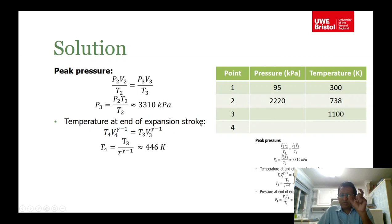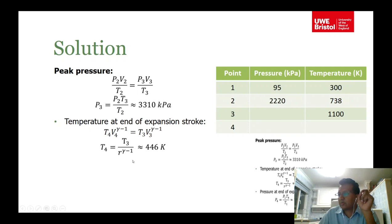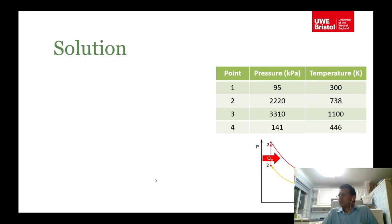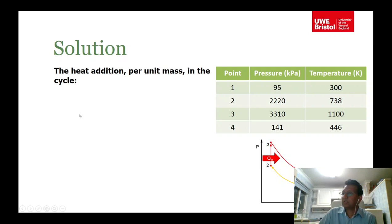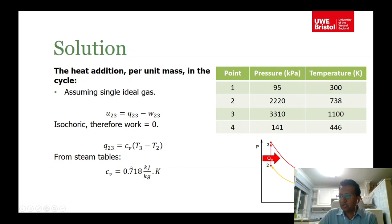With conditions at state 3 known, you apply the isentropic relation P3V3^gamma = P4V4^gamma to find temperature T4 and pressure P4. P4 = P1 × (T2/T1) gives approximately 141 kPa. Heat addition Q23 = cv(T3 - T2), where cv = 0.718 kJ/(kg·K), gives the heat addition per unit mass.